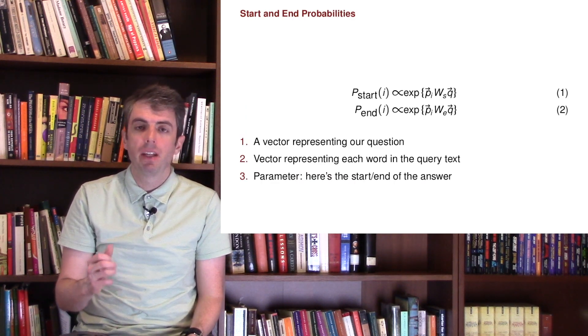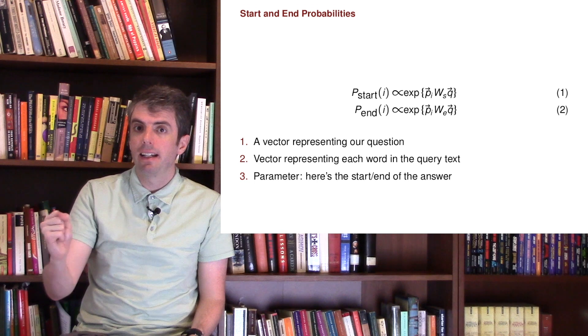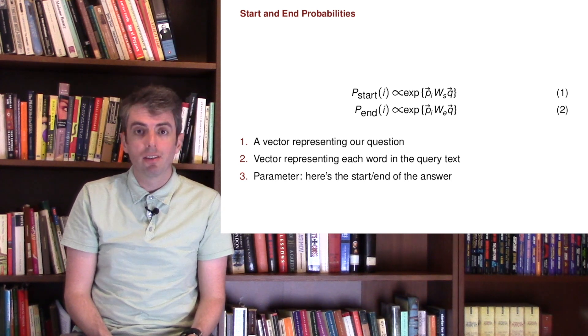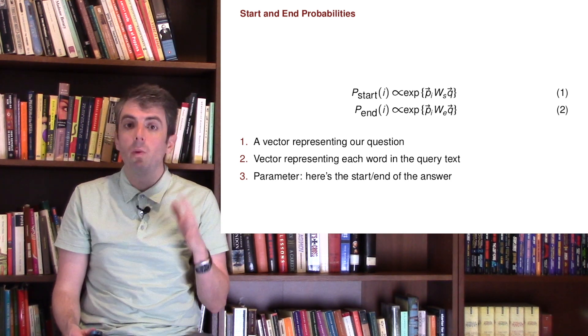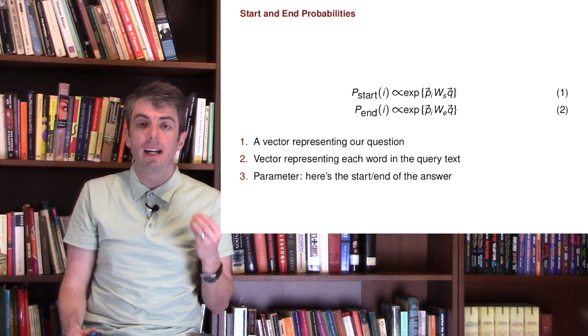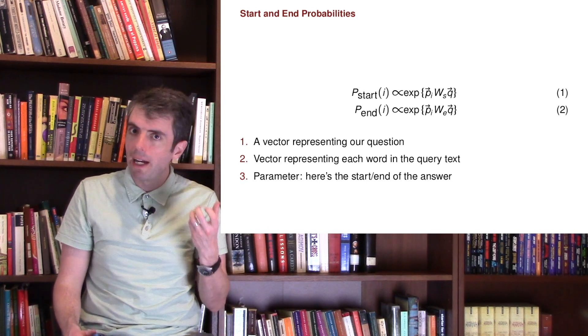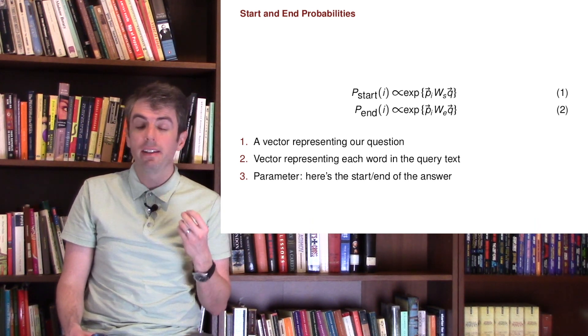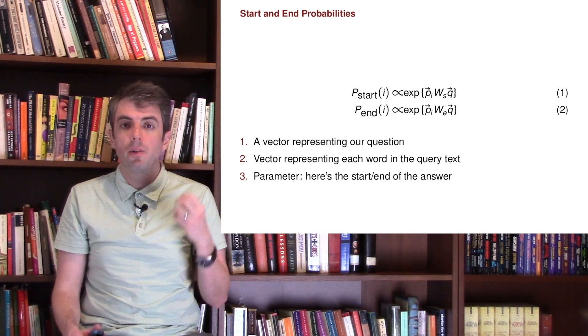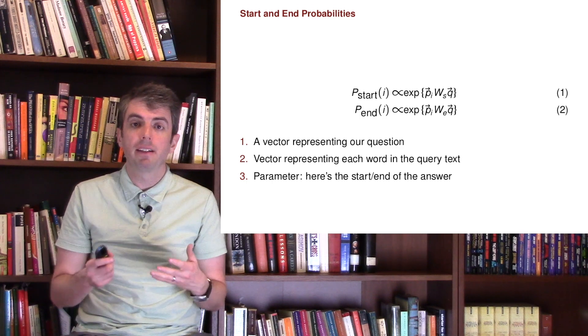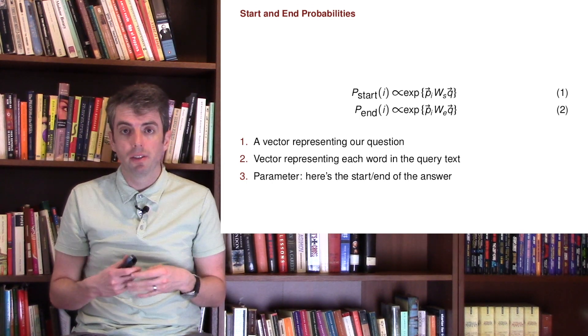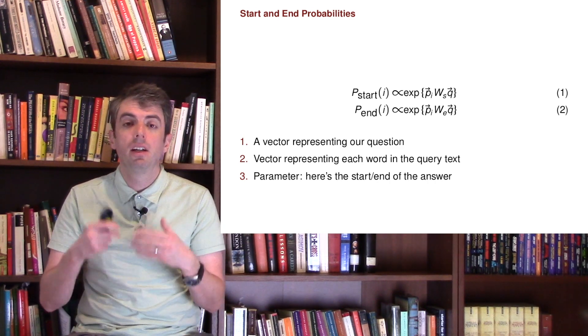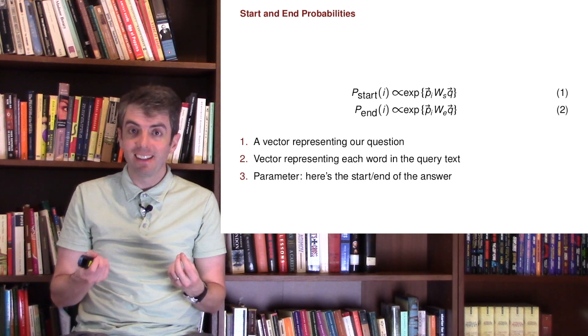Let's work backward from the problem of taking our highlighter and highlighting the answer in our passage. We can think about this as a supervised machine learning problem, a lot like the logistic regression examples we saw before. We have a bunch of words, and for each word we need to decide: Is this word the start of the answer or not? It's a binary choice. Similarly, for each word, is this the end of the answer or not? So this is like logistic regression - we have these binary decisions for every word. Is it the start? Yes or no? Is it the end? Yes or no?